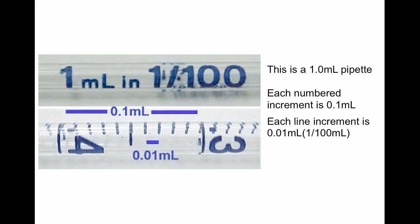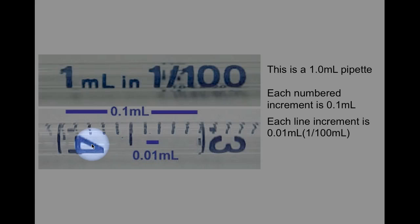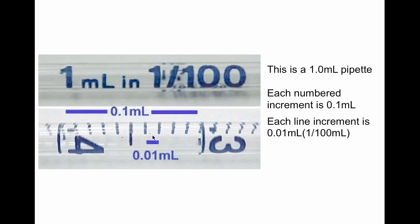One other example, this is a 1 ml pipet. Each numbered increment is a tenth of a milliliter. So between the 4 and the 3 here, this is 1 tenth of a milliliter and each little line now represents 1 hundredth of a milliliter. So as I said, you need to pay attention and read what's printed on the pipet so that you know exactly what you're getting.